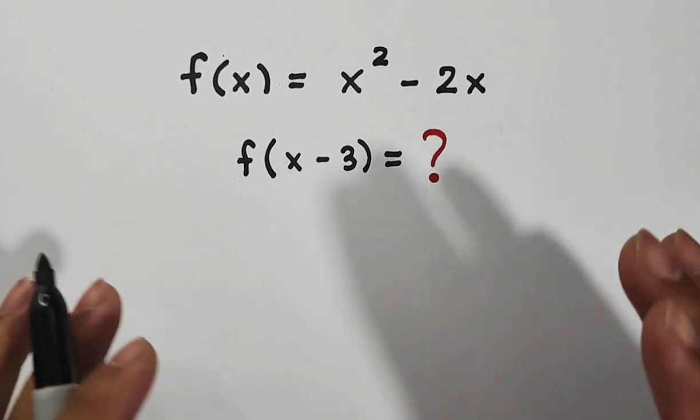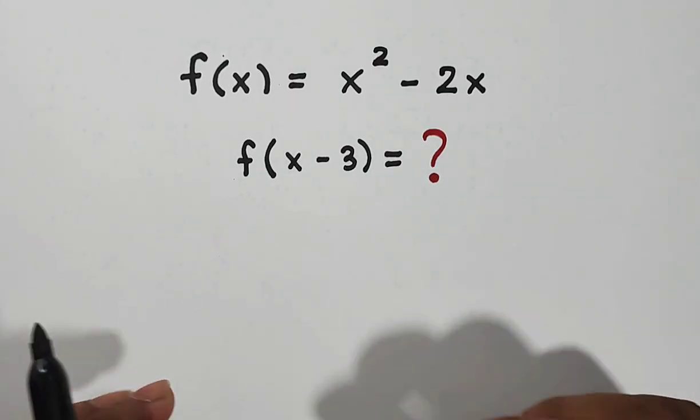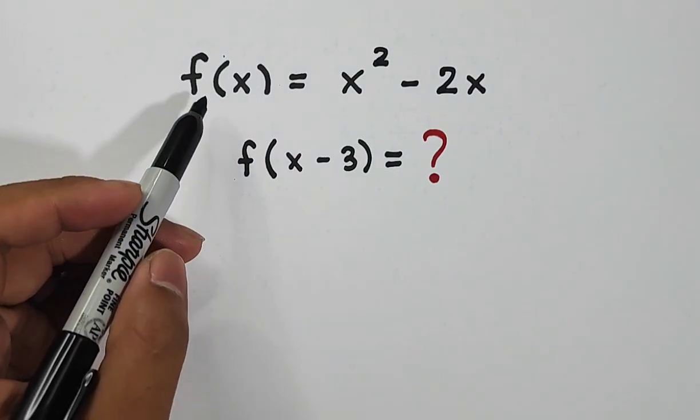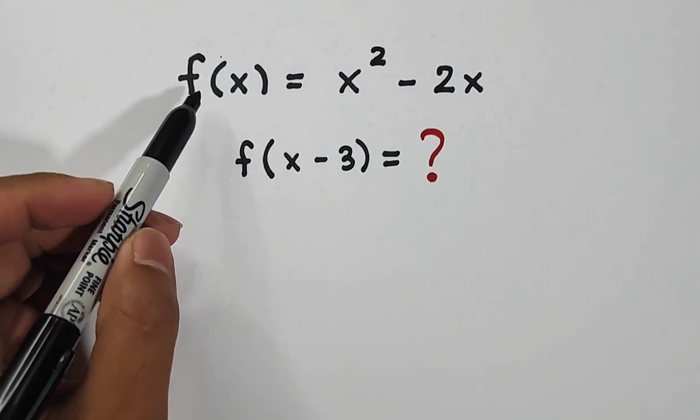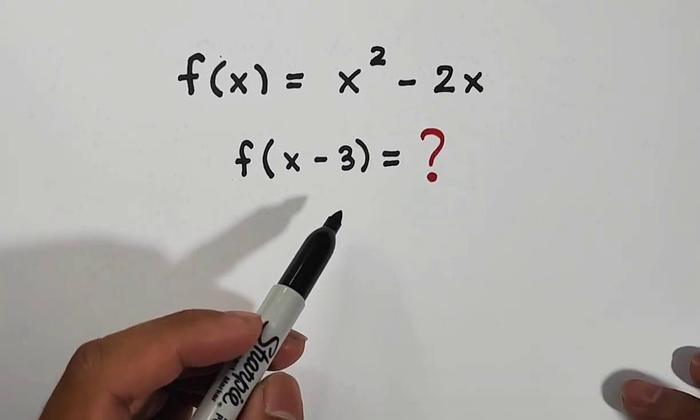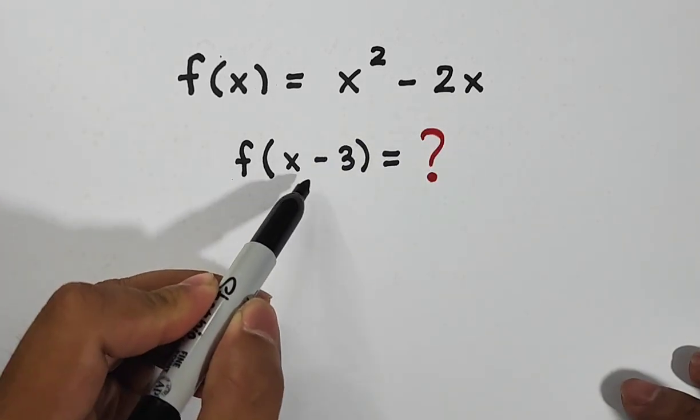So without further ado, let's do this topic. We are given here function f. What we have here is function f(x) is equal to x squared minus 2x, and we are asked to evaluate f(x - 3).